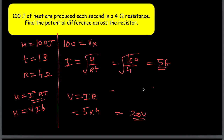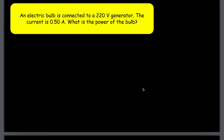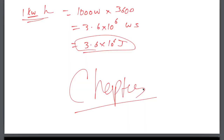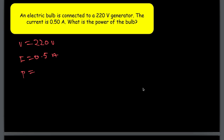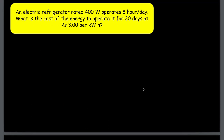Third numerical: an electric bulb is connected to a 220-volt generator and the current is 0.50 amperes. What is the power? Using P = VI: P = 220 × 0.5 = 110 watts.